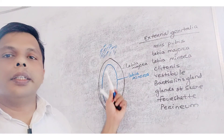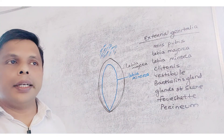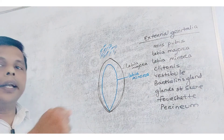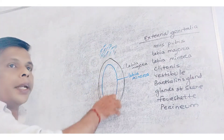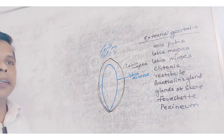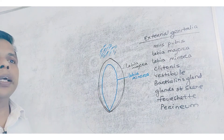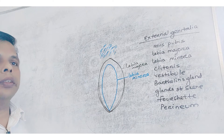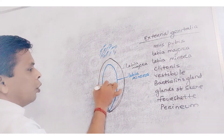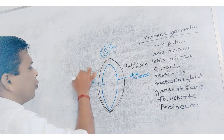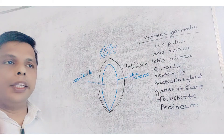Labia majora is the fleshy fold which extends downward from the front of mons pubis. Inside labia majora there is an inner folding, that is labia minora. The part which is covered by labia minora — this portion is called as vestibule. The total area occupied by labia minora is the vestibule.